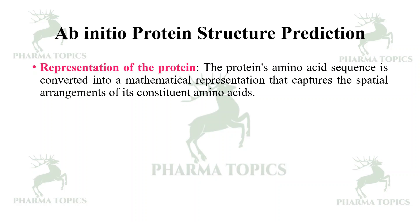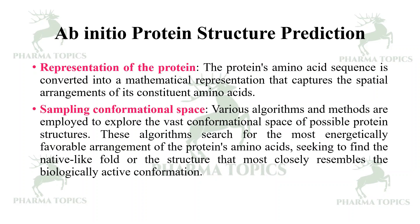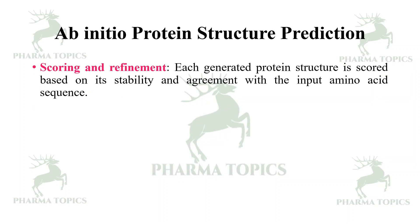First, the protein's amino acid sequence is converted into a mathematical representation that captures the spatial arrangements of its constituent amino acids. Next, in the conformational space sampling step, various algorithms explore the vast conformational space of possible protein structures, searching for the most energetically favorable arrangement — closely resembling the biologically active native conformation.